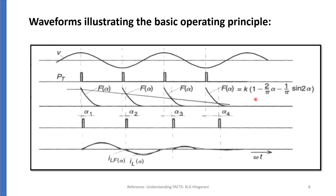This is the equation for the fundamental current of TCR. In the first half cycle, the magnitude of the reference current required ILF is set, and at the corresponding instant alpha 1 is triggered — plotted at the instant where the required current matches the fundamental current characteristic. In the second half cycle, the required ILF is identified, and using the ILF characteristic plot, the value at the intersection gives alpha 2, which is the firing instant at which the gate signal should be applied.